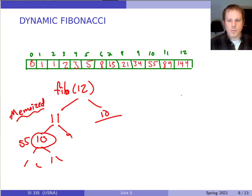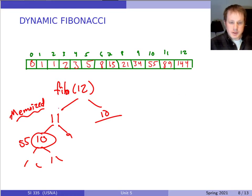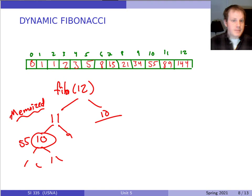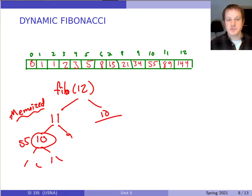So what's the advantage of the dynamic programming version here? It's really doing asymptotically the same amount of work as the memoized version. It maybe takes a little more ingenuity to come up with the dynamic programming version, but once you come up with it, it's so much simpler. It's like, oh my god, this is the way we have to do it.